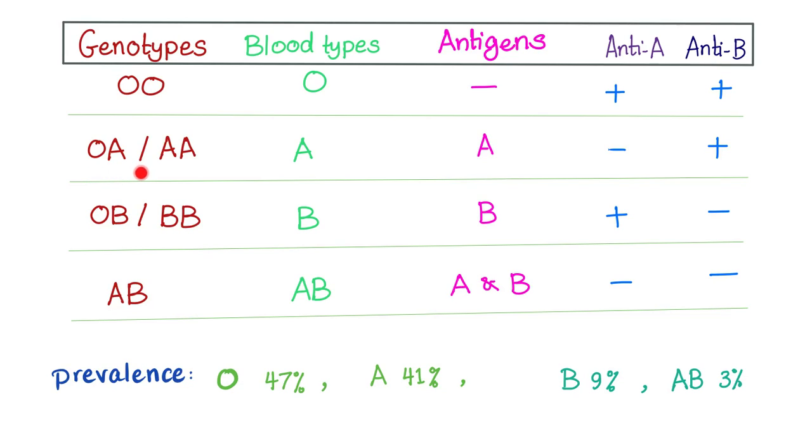If your genotype is OA or AA, it doesn't matter because A is dominant. So the blood type is A in either case. Antigen is A. How about the antibody? Since I have A, I cannot make an antibody against myself. This is stupid. So I don't have anti-A.